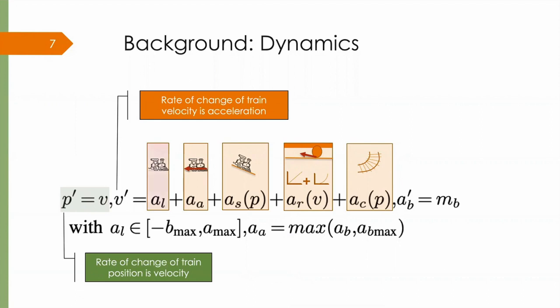There's A sub L, which is locomotive traction. A sub A is the deceleration because of the air brakes. A sub S is the acceleration under gravity due to the slope of the track. A sub R is rolling resistance, also called Davis resistance.